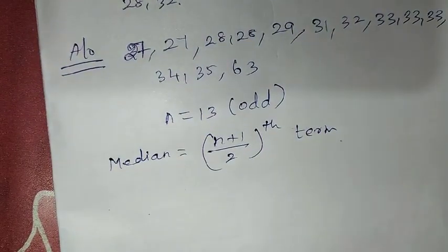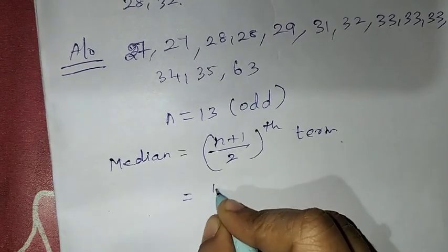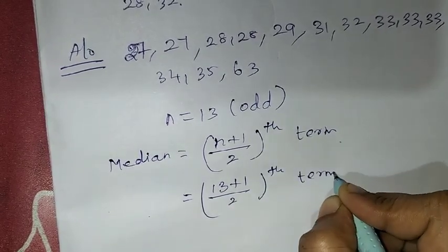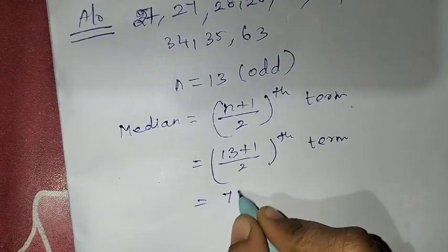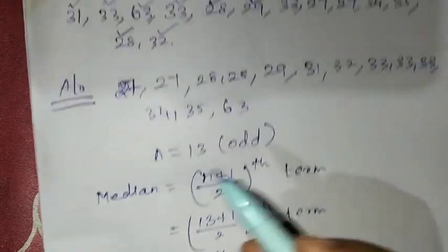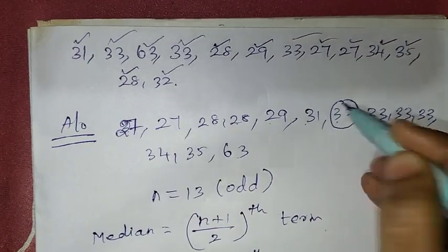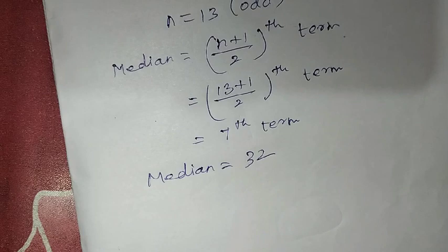Applying the formula: (N+1)/2 th term = (13+1)/2 = 14/2 = 7. So the 7th term is the median. Counting to the 7th term: 1, 2, 3, 4, 5, 6, 7 — the answer is 32. So the median is 32, which is correct. There are 6 numbers on the right side and 6 on the left side, and the middle number is 32.